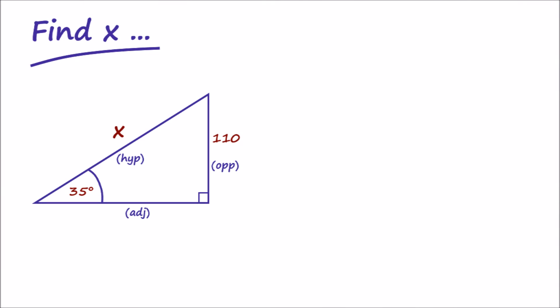Here we have a right angle triangle. Let's find the length of side x, given that we know one of the angles is 35 degrees, and that the opposite side is 110 units in length.